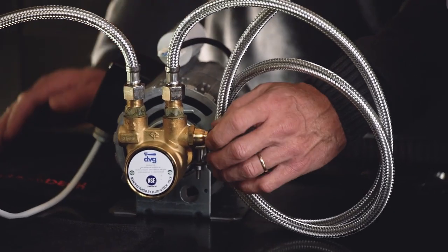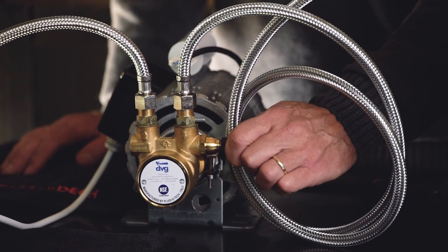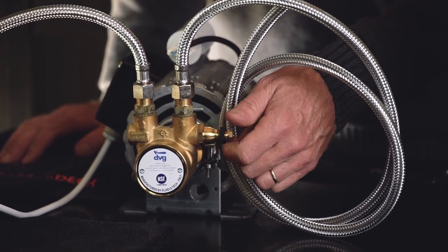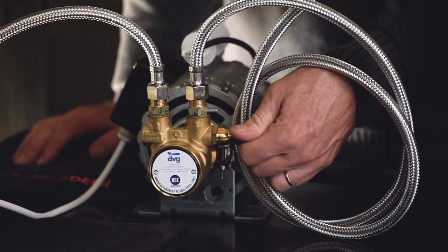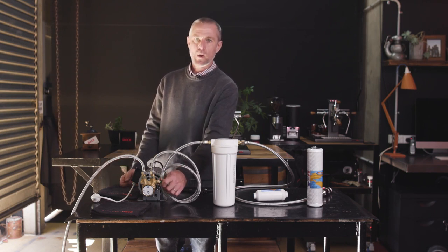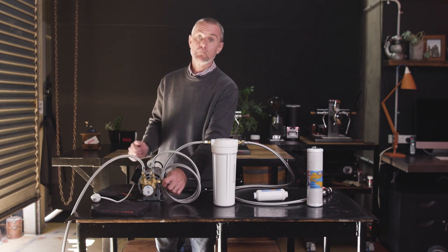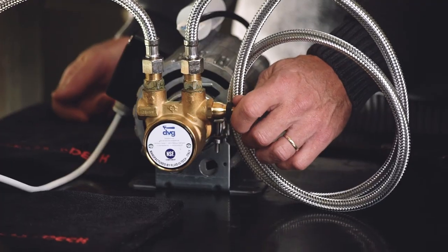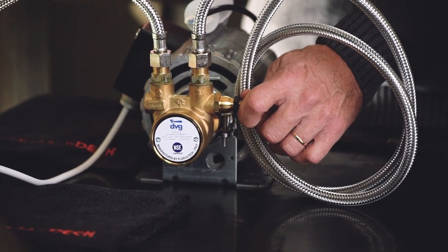So this is a little adjusting nut here. The further out you set that, the lower the pressure. The more you wind it in, the higher the pressure. But ideally, the optimum pressure is nine bar. And that's when loaded with a blind filter in the basket, then I would adjust that to show nine bar.